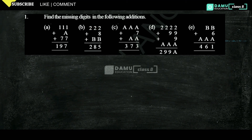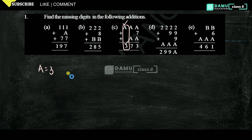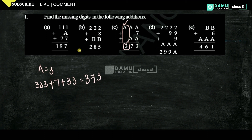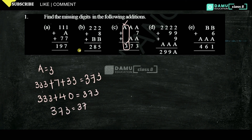Problem C: AAA plus A7 plus AA equals 373. From the ones place, A equals 3. So AAA means 333, plus 7, plus 33. Let's check: 333 plus 7 plus 33 equals 373. Yes, 373 equals 373, so A equals 3.